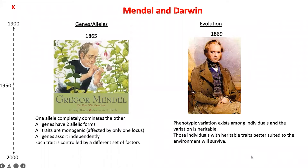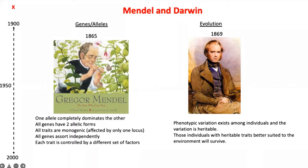Gregor Mendel discovered, using maths and stats in a subset of experiments with the pea plant, some kind of mathematical relationship between the phenotypes he was observing as he crossed peas — hybridization as they called it at that time — from generation to generation. He could reproduce his observations for several traits, several changes in the way the pea pods and the seeds themselves looked. That was pretty much what he wrote in his 1865 paper.